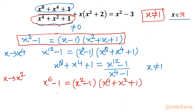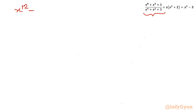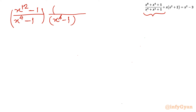Now I will put both values into the given equation. The numerator becomes (x¹² - 1) / (x⁴ - 1), and the denominator becomes (x⁶ - 1) / (x² - 1). So the full rational part of the expression becomes [(x¹² - 1)(x² - 1)] / [(x⁴ - 1)(x⁶ - 1)].